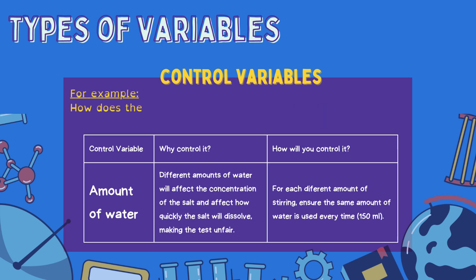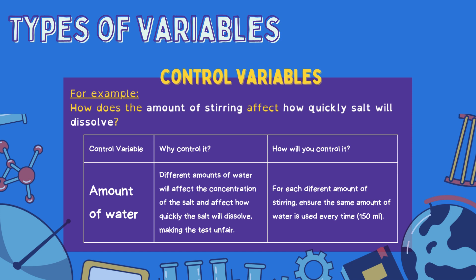In the final example — how does the amount of stirring affect how quickly salt will dissolve? — one possible control variable could be the amount of water. If we use different amounts of water, it will affect the concentration of the salt, and that will affect how quickly the salt dissolves, making the test unfair. To control this, for each different amount of stirring, we will ensure that the same amount of water is used every time — for example, 150 millilitres. If we don't do this, we won't know if it's the amount of water, the amount of stirring, or another variable affecting how quickly the salt will dissolve, when our question wants to investigate only the amount of stirring.